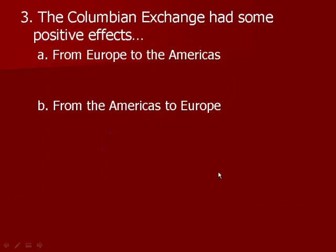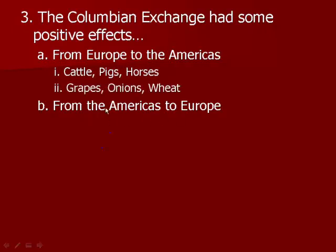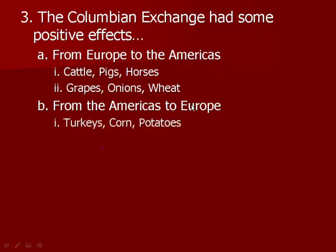The Columbian Exchange has some positive effects. From Europe to the Americas came cattle, pigs, and horses, as well as grapes, onions, and wheat — things that would never have existed in the Americas without the Columbian Exchange. From the Americas to Europe came turkeys, corn, and potatoes.